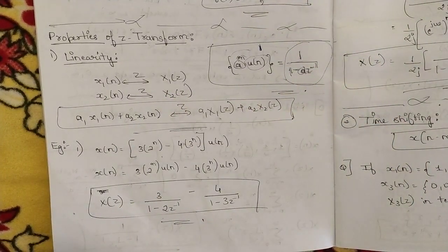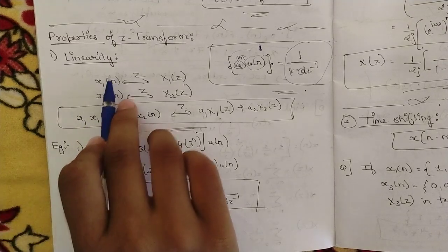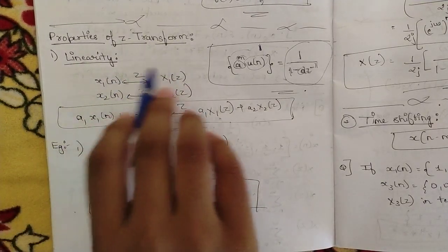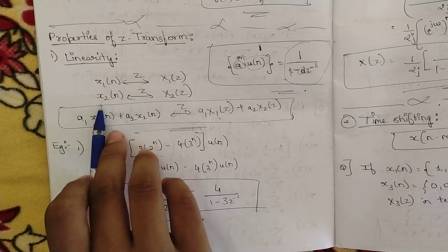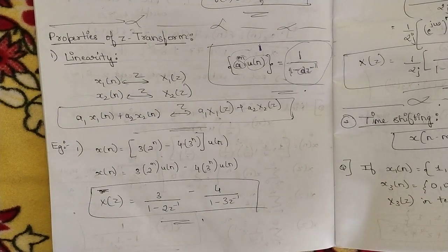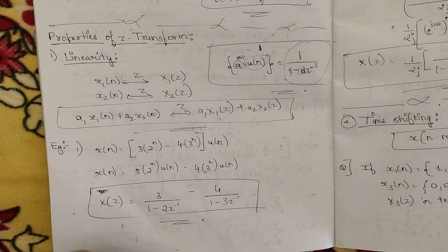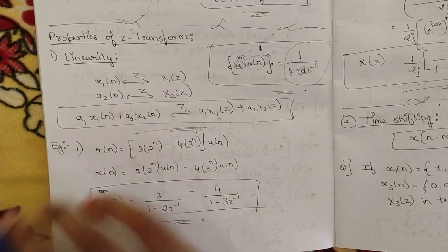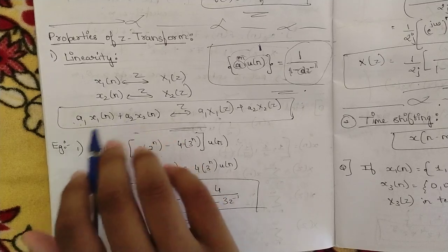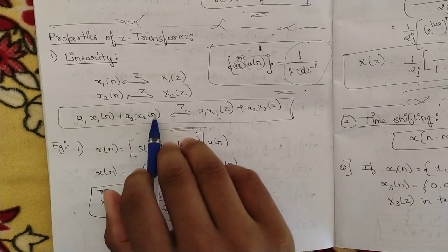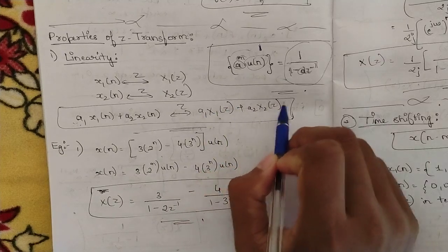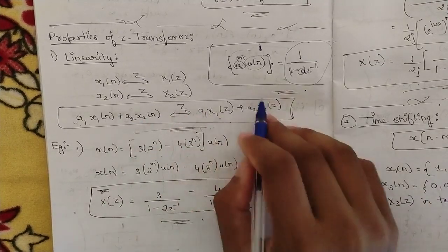Now the linearity property: we have two sequences x1(n) and x2(n). Converting x1(n) to the Z-domain gives X1(z), and x2(n) gives X2(z). As we have discussed with respect to DFT, with constants a1 and a2, the linearity property states: a1·x1(n) + a2·x2(n), when converted to the Z-domain, equals a1·X1(z) + a2·X2(z). This is the linearity property written in equation form.